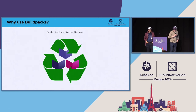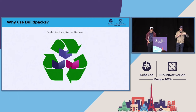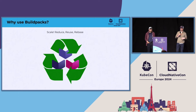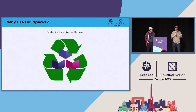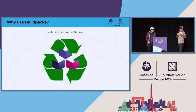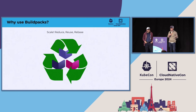So why use buildpacks? How many of you have made a seemingly trivial change to your Dockerfile and then realized you've busted every one of your cache layers and have to rebuild from scratch, waiting minutes or longer? Now do that 10 million times — it's not really efficient. That efficiency at scale is really where buildpacks came from. Platforms managing that large a set of container images need a mechanism that isn't as rigid as the Dockerfile.